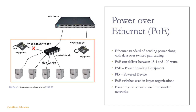Power over Ethernet is the ethernet standard of sending power along with data over twisted pair cabling. It can deliver between 15.4 and 100 watts of power. The power sourcing equipment is the device supplying the power, such as a switch. Powered devices are the devices receiving the power, such as a VoIP phone or access point. PoE switches are used in larger organizations, while power injectors — separate devices that inject power into a data cable — can be used in smaller networks.